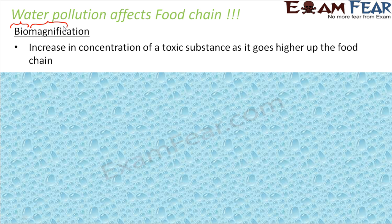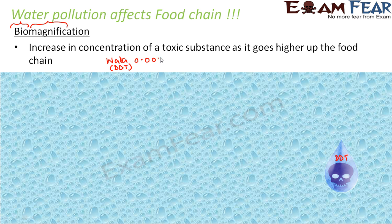Let us take an example. Suppose the water in a particular river is being polluted and the water has some toxin. Let us say the toxin present in the water is DDT — or maybe some mercury waste or chemical waste. For now, let us consider that DDT is present in this water. The concentration of DDT in the water is 0.003 particles per billion. This is a very low concentration, but even a low concentration of DDT will pollute the water. DDT is a chemical which is toxic and poisonous.